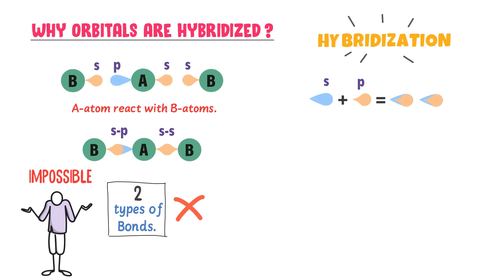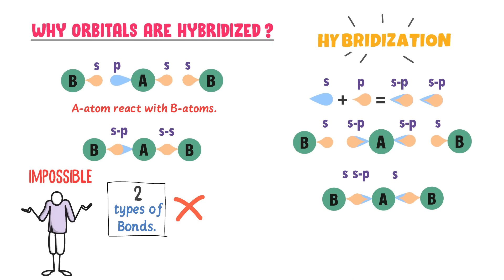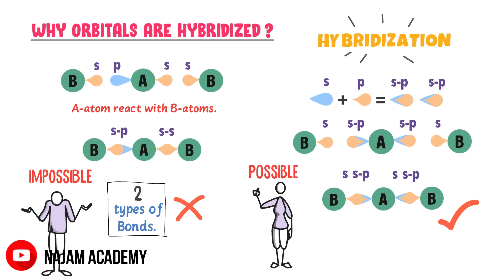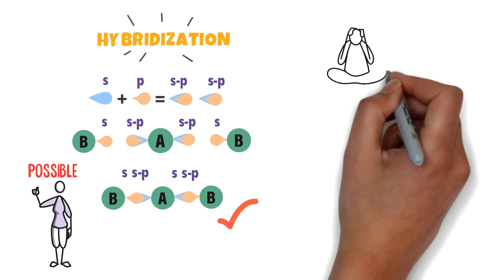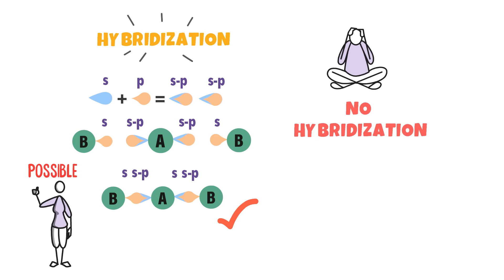To solve this issue, we look at hybridization of atomic orbitals. S orbital and P orbital combine together to form two hybrid orbitals known as SP orbitals. Each SP orbital of A atom forms a covalent bond with S orbital of B atom, so both bonds are now SP-S bonds, which is possible, understandable, and 100% right. Remember that hybridization does not take place in every molecule — for example, no hybridization occurs in H2, HCl, H2S, etc.